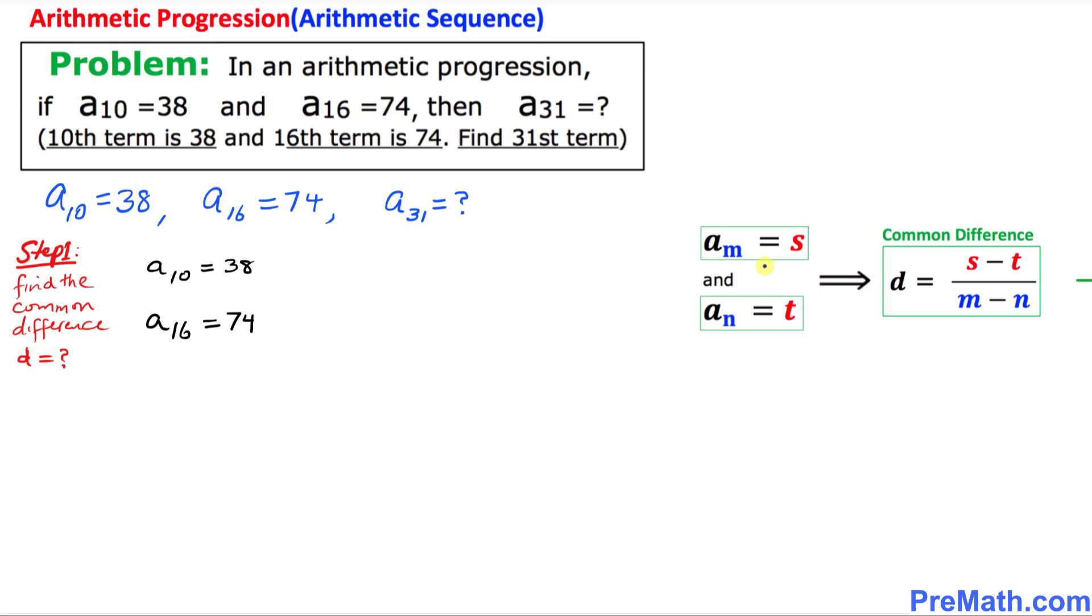And here is the simple common difference formula. It states if a sub m equals s and a sub n equals t, then the common difference would be equal to the ratio of their differences.